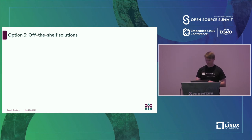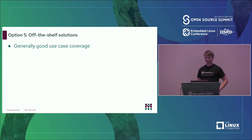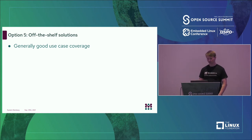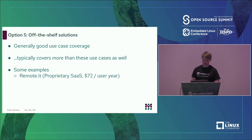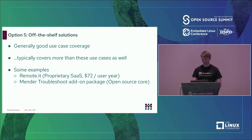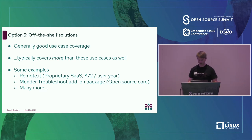The last option is off-the-shelf solutions for remote access. These have good use-case coverage — they will generally cover most of what's needed, at least the functional features the user wants, maybe not all the security features. They also typically do more than just this. There are a few examples; the plan is not to compare them all, but one was already mentioned — it's a hosted or SaaS solution. Mender also has a troubleshoot add-on package. There are lots of others — if you Google 'remote access IoT' you'll find quite a bit.